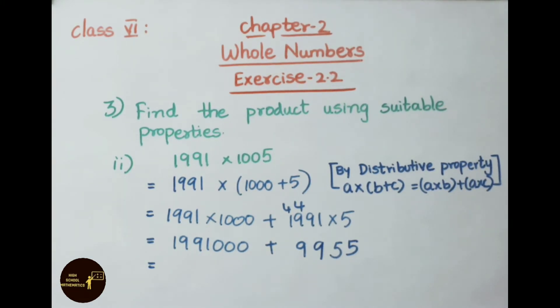Now we shall add 1,991,000 plus 9,955. 0 plus 5 is 5. 0 plus 5 is 5. 0 plus 9 is 9. 1 plus 9 is 10, so 0 carry 1. 9 plus 1 is 10, 0 carry 1. 9 plus 1 is 10, so 1 plus 1 is 2. We got answer 2,000,955.